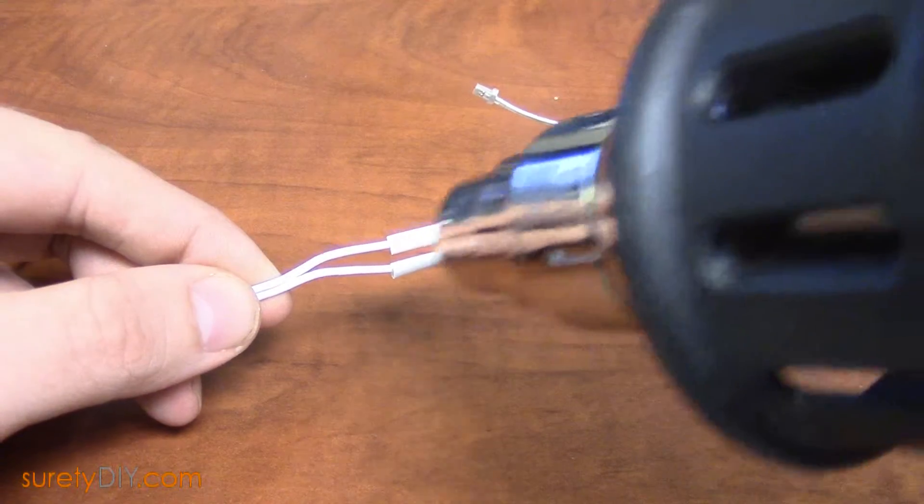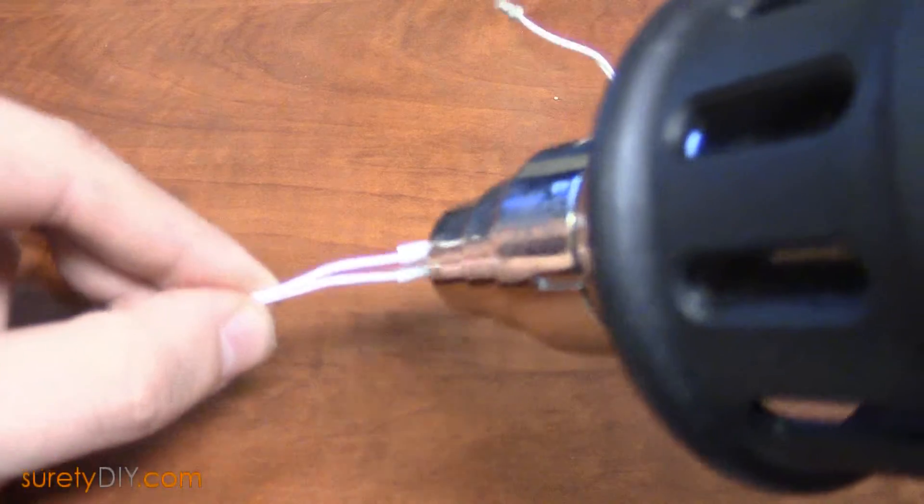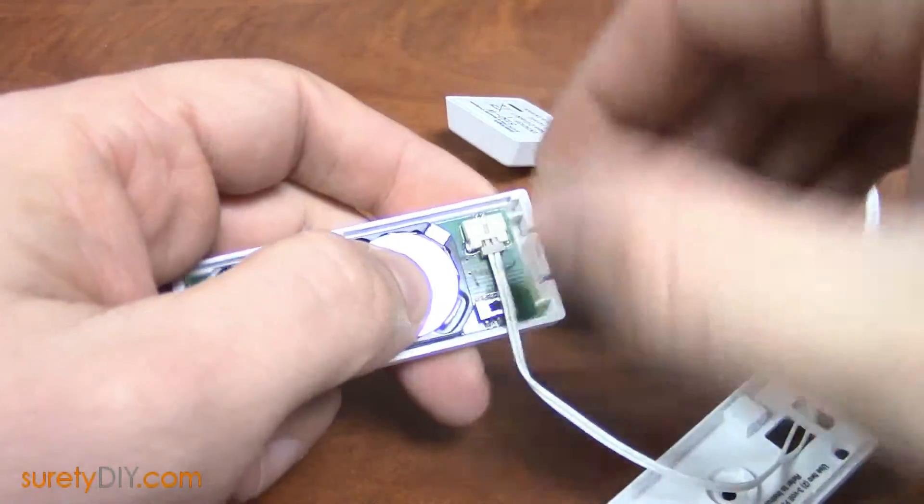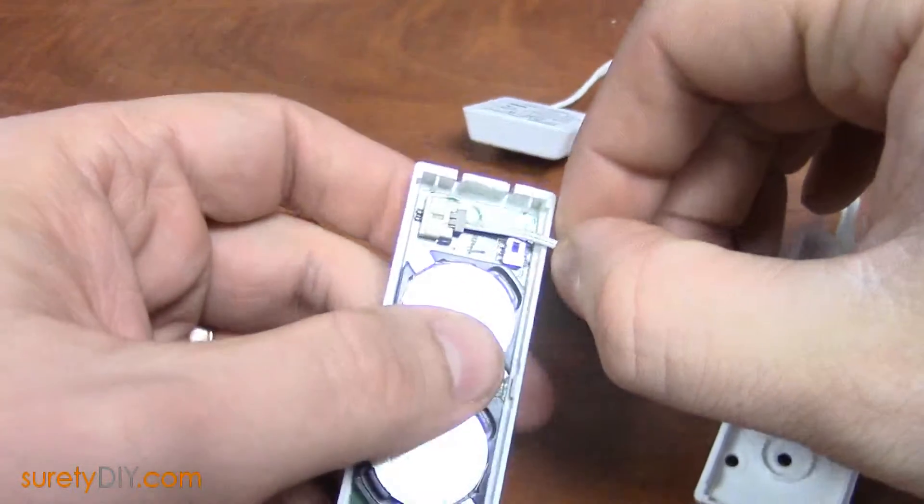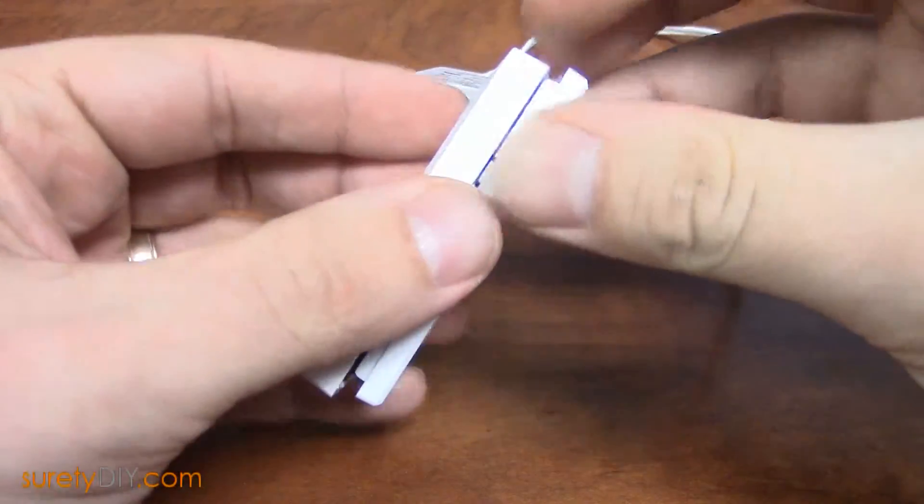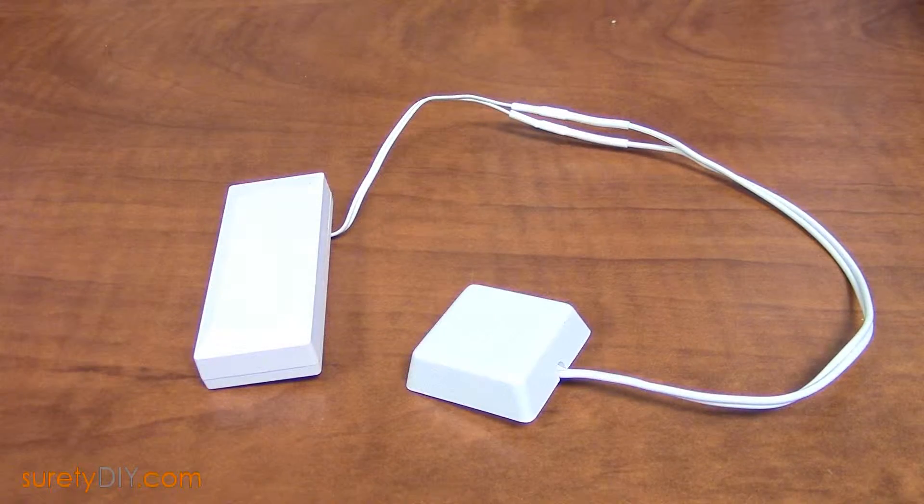Apply a source of directed heat to the shrink tubing until it is tight around the wires. Finally, slide the lead through the hole in the mounting plate of the DW10 and snap the connector into place. You can then close up the DW10 and program it into your panel.